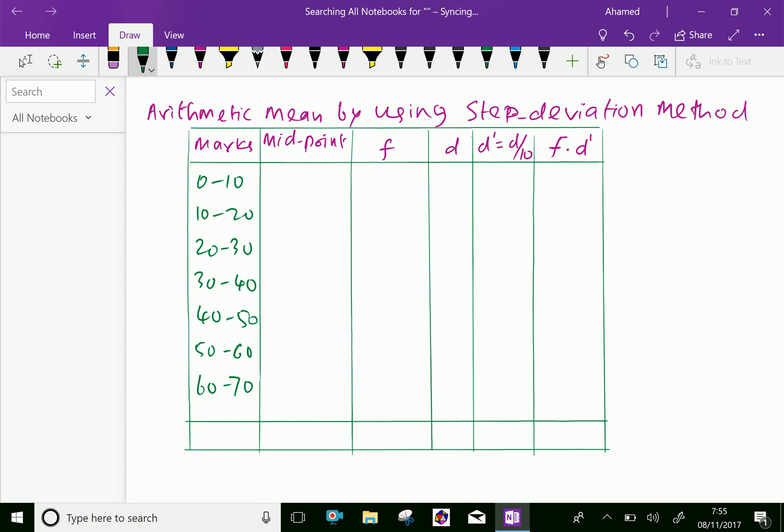Now, the midpoints: 0 to 10 midpoint is 5, 10 to 20 is 15, then 25, 35, 45, 55, and 65. The frequencies are given: 6, 10, 13, 15, 12, 6, and 2.